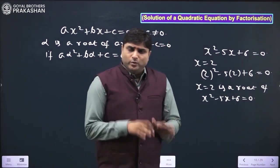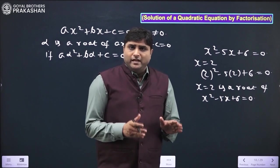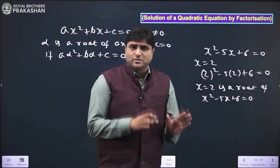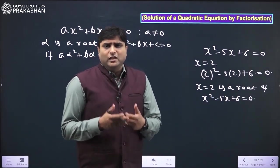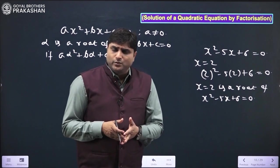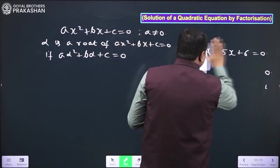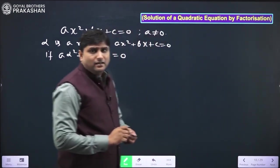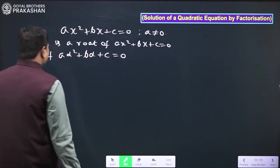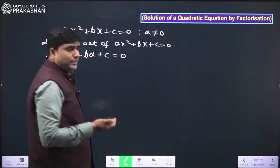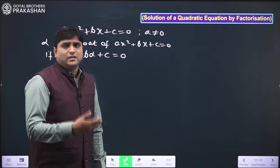We know from quadratic polynomials that we can have a maximum of two real zeros, so we can have two real roots in a quadratic equation. The conclusion is: the value of x which satisfies the equation is called the solution or root of the quadratic equation. Generally, roots are represented by Greek letters alpha (α) and beta (β).